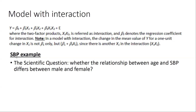Here is the SBP example. The scientific question corresponding to the interaction model is whether the relationship between age and systolic blood pressure differs between male and female. In other words, the question is whether gender is the effect modifier for the relationship between age and systolic blood pressure, or equivalently, if there is interaction between gender and age.